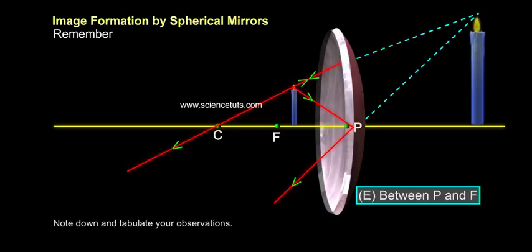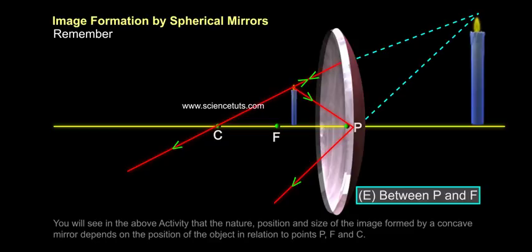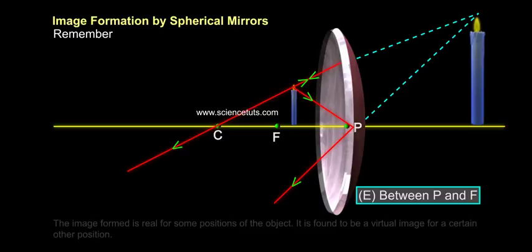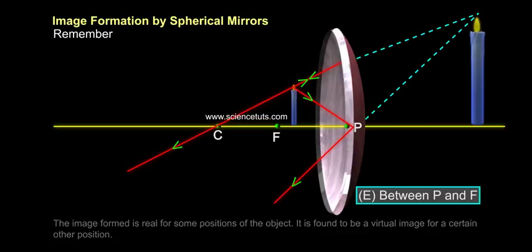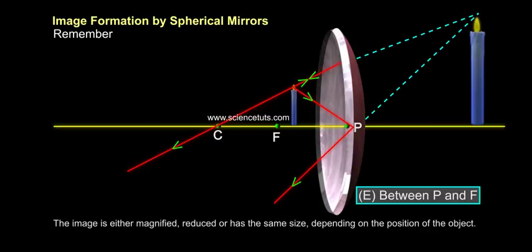Note down and tabulate your observations. You will see in the above activity that the nature, position, and size of the image formed by a concave mirror depends on the position of the object in relation to points P, F, and C. The image formed is real for some positions of the object. It is found to be a virtual image for a certain other position. The image is either magnified, reduced, or has the same size depending on the position of the object.